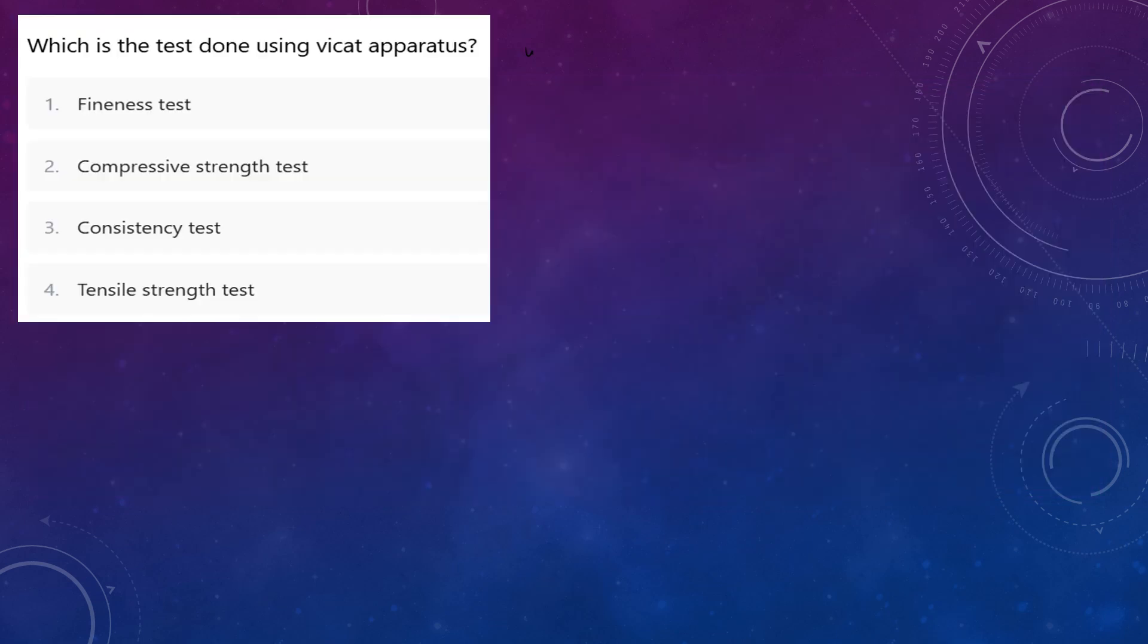First question is, what is the test done using the Vicat apparatus? By using the Vicat apparatus, we conduct two tests: consistency test and setting time test. The third option is correct—consistency test is conducted using the Vicat apparatus. We will see the tests conducted on cement one by one.